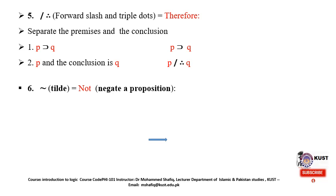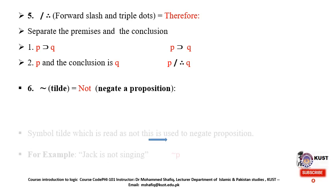The sixth symbol used in symbolic logic is the tilde, used for negation of propositions — it is read as 'not.' The tilde symbolizes the negation of a proposition. For example, 'Jack is not singing' — if P stands for 'Jack is singing,' then 'Jack is not singing' is expressed symbolically as ~P (tilde P).